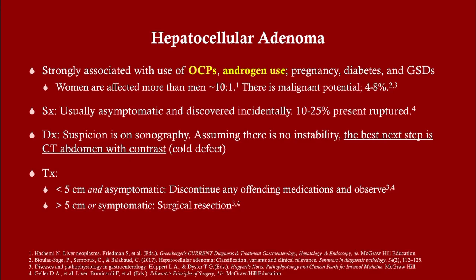Hepatocellular adenoma is strongly associated with oral contraceptive use or androgen use, with other predisposing factors including pregnancy. Predisposition is based on the amount of circulating estrogen. Combined oral contraceptives containing both progesterone and estrogen can cause it. Anabolic steroids can predispose you as well, since testosterone can be converted to estrogen via aromatase. Women are affected more than men, whether due to biological sex or oral contraceptive use.